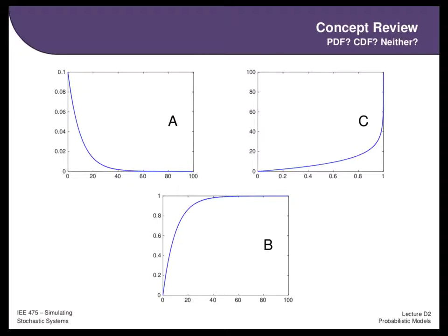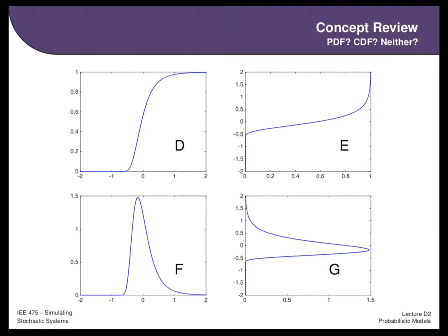Let's do one more — same deal, take 30 seconds. Are graphs D, E, F, and G each a PDF, CDF, or neither? Notice some of these go into negatives on the x-axis or y-axis. Now: how many people think D is a CDF? D starts at 0, ends at 1, and is non-decreasing everywhere. It's okay for outcomes to be negative — that just means the random variable sometimes takes negative values, like a temperature difference. D meets all our criteria: it's not a PDF, but it is a CDF.